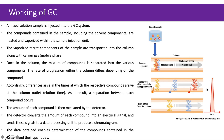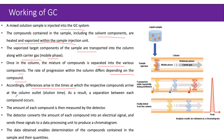Let us see the working of gas chromatography. A mixed solution sample is injected into the GC system into the solvent stream. The compounds contained in the sample including the solvent components are heated and vaporized within the sample injection unit. The vaporized target components are transported into the column along with the carrier gas, our mobile phase. Once in the column, the mixture of compounds is separated into various components. The rate of progression within the column differs depending upon the compound, and accordingly differences arise in the elution times at which respective compounds arrive at the column outlet, resulting in separation.